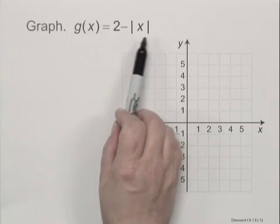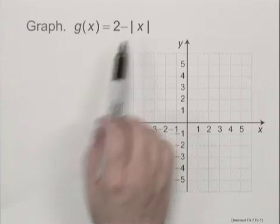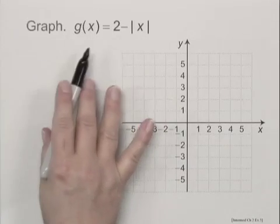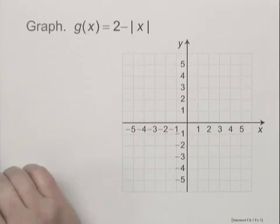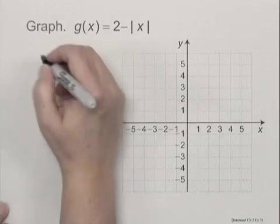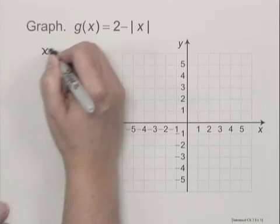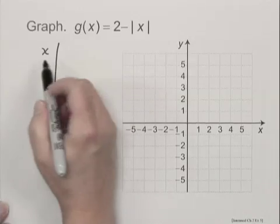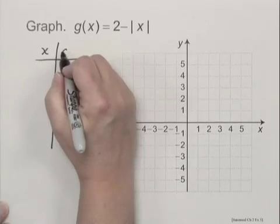Since we have an absolute value sign, this will not be a linear equation. We will not get a straight line, so we'll need several points here. Let's choose some values for x and calculate the corresponding values of g(x).